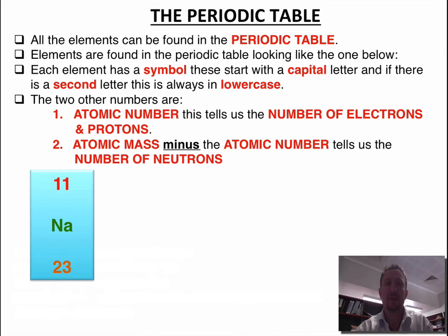Now the other thing that you will notice when you look at the periodic table are there are a number of numbers which are associated with each of the elements and each of the symbols. We've got a number on the top of the symbol and we've got a number on the bottom of the symbol. The number on the top of the symbol is the atomic number and that tells us the number of electrons and the number of protons. The number on the bottom is the atomic mass. Now the atomic mass minus the atomic number will tell us the number of neutrons.